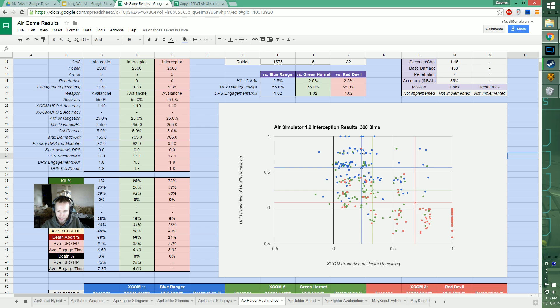Look at this red dot - three intercepts and we've dealt less than 20% of the UFO's health. Avalanches have a lot of variance. You can see the alternate side - sometimes you get a ridiculous intercept and kill the UFO on one intercept. That's a pretty widespread distribution.